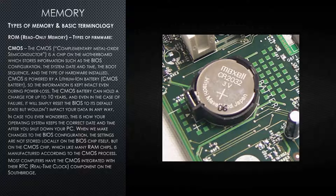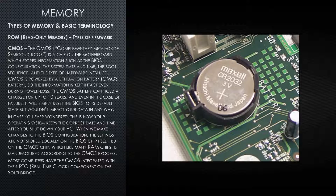CMOS is powered by a lithium-ion battery, or the CMOS battery, so the information is kept intact even during a power loss. The CMOS battery can hold a charge for up to 10 years, and even in case of failure, it will simply reset the BIOS to its default settings without impacting your data in any way. This is how your operating system keeps the correct date and time after you shut down your PC. When you make changes to the BIOS configuration, the settings are not stored locally on the BIOS chip itself but on the CMOS chip, which, like many RAM chips, is manufactured according to the CMOS process. Most computers have the CMOS integrated with their RTC, the real-time clock component, on the South Bridge.